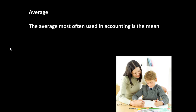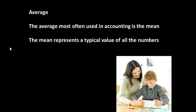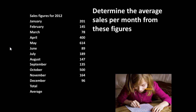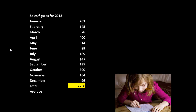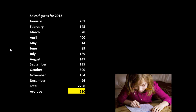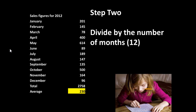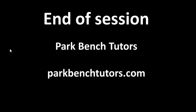Averages. The most common one used in accounting is the mean, which represents a typical value for all the numbers. Let's have the average sales per month for these figures — bearing in mind that in this sort of average you can't have half a sale; you either make a sale or you don't. Here are sales for each month of the year. The first thing we do is total them all so we know what total sales were. Then we work out what the average was: I divided the total sales by the number of months — in other words I divided 2,758 by 12, because there are 12 months in the year.